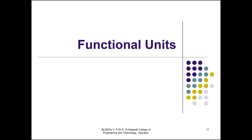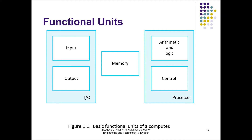Now let's look at the functional units of a computer — something you have already studied in your first semester. The functional units of a computer can be divided into three parts: the input/output unit (I/O unit), the processor — which consists of the Arithmetic and Logic Unit (ALU) and the Control Unit — and the memory unit.